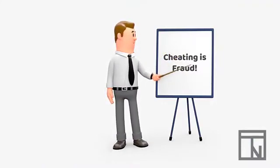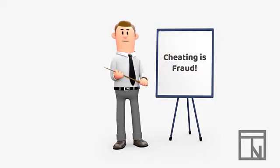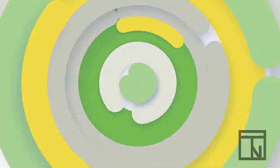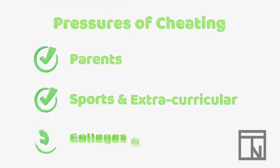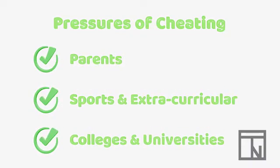I'll bet you never thought of it that way before. So let's see how the fraud triangle fits into the scenario of cheating. Are there any outside pressures that would cause a student to want to cheat? Of course there are. Parents sometimes put pressure on students to achieve high scores. Sports teams have expectations for certain grades in order to qualify to play. Colleges often have minimum grade requirements for applications and scholarships. There are all kinds of pressures that would make a student want to cheat.